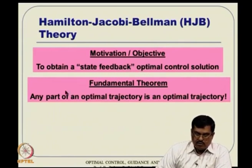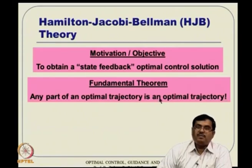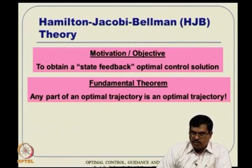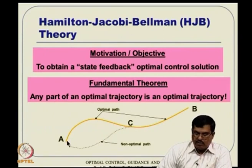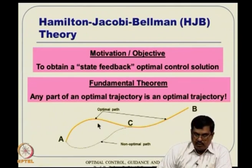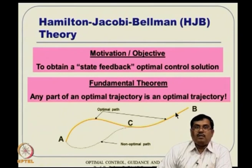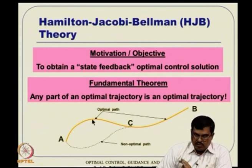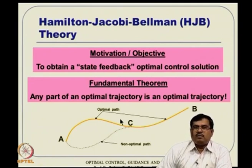The fundamental theorem relies on this intuitive argument: any part of an optimal trajectory is itself an optimal trajectory. If we have found an optimal path from point A to point B via point C, then any sub-piece of this trajectory is also optimal. This is a different problem — the problem starting from A and stopping at B is different from the problem starting at A and stopping at C.